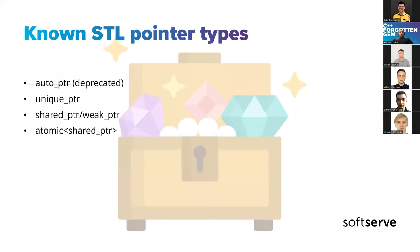What we know about the STL pointer types — mostly about the smart pointers that everyone knows — so there was auto pointer, which got deprecated a long time ago; there is unique pointer, shared pointer, and weak pointer; and recently an atomic shared pointer was added.